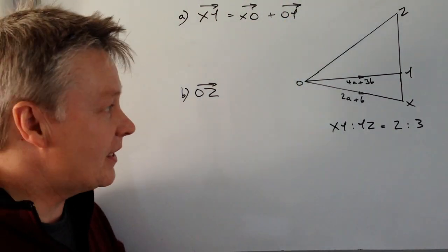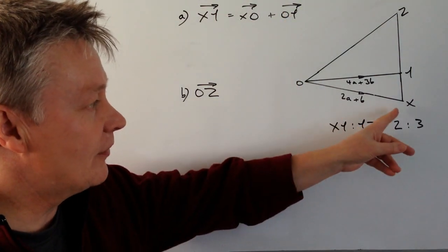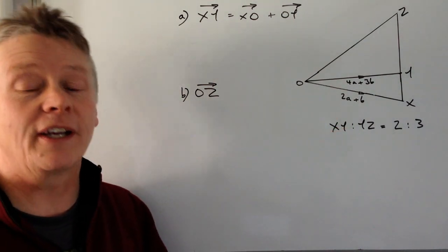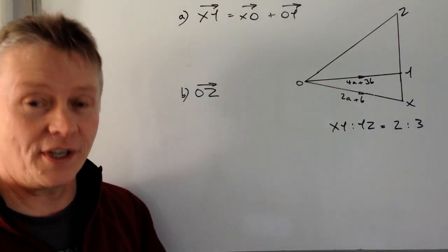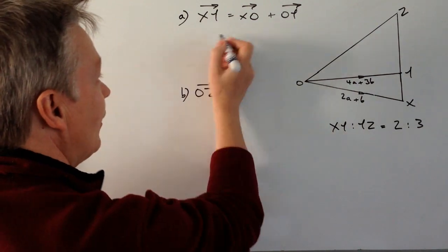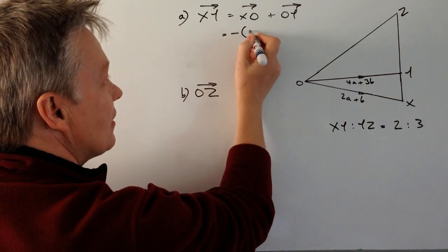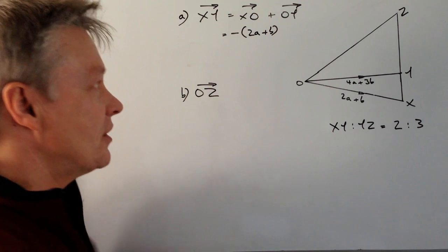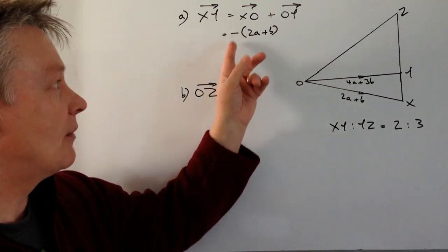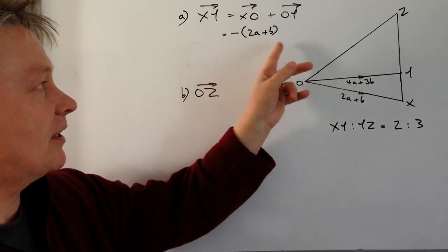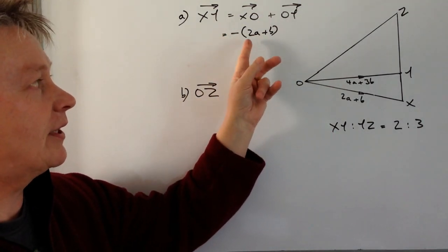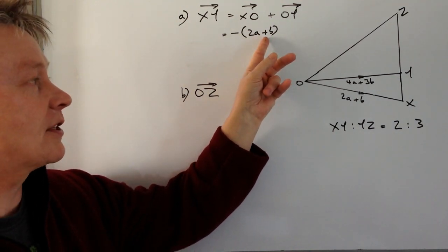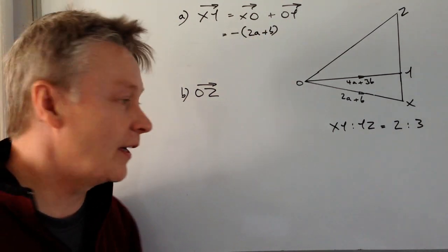Let's have a look at that in a bit more detail. We know that XO is 2a + b, but we're going in the opposite direction, so I've got minus (2a + b). I would suggest you put the minus outside the brackets, because that minus will have an impact on the 2a part and also on the positive b.